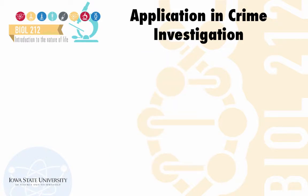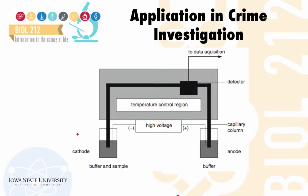Often these days, this process is automated. The STRs are first amplified using PCR, and while being amplified, they are labeled with fluorescent molecules that can be detected in a fluorescent spectrometer. After amplification, the samples are separated using capillary gel electrophoresis. This picture shows how capillary electrophoresis works.